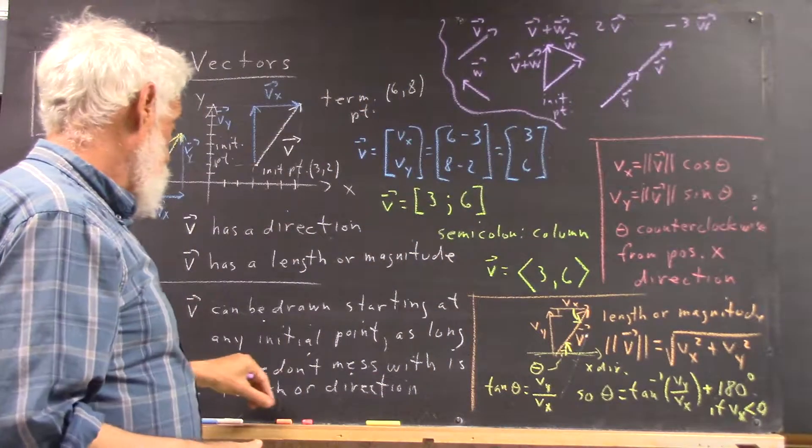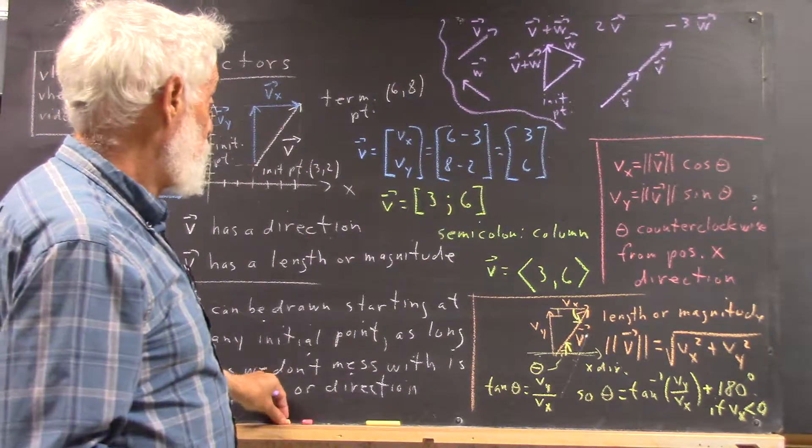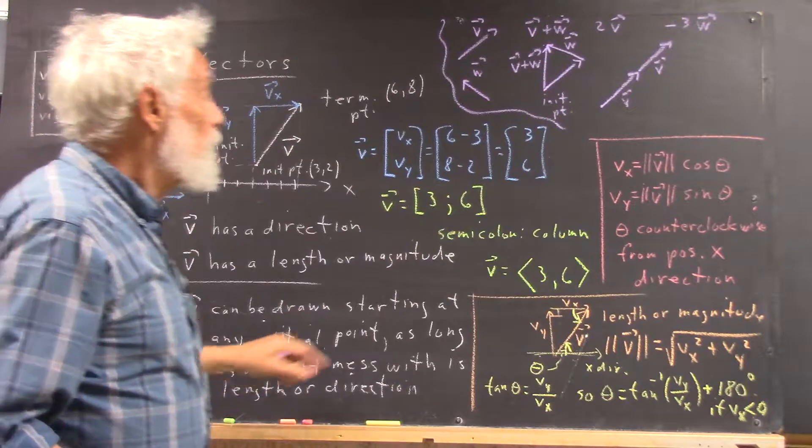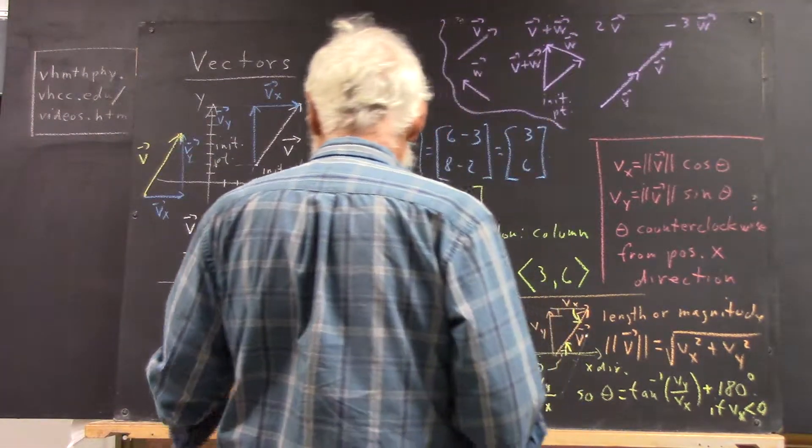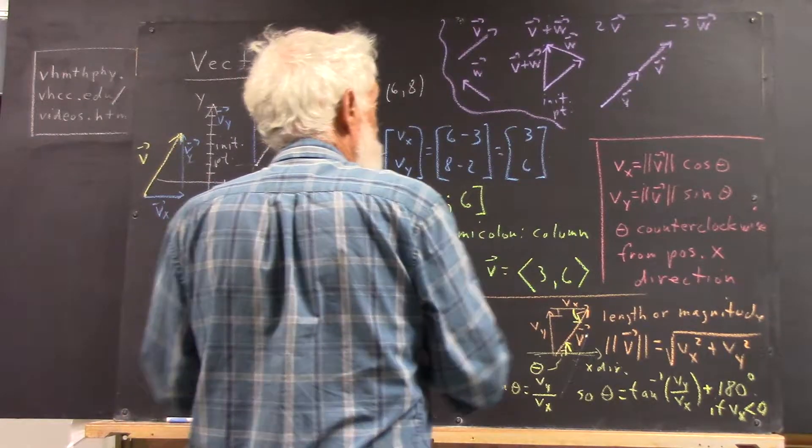And then draw the vector v again from the terminal point of v. I don't think I got those quite right. Not sure the angle's right, and I'm not sure the lengths are the same, but you know what I mean. So, that gives you the vector 2v.